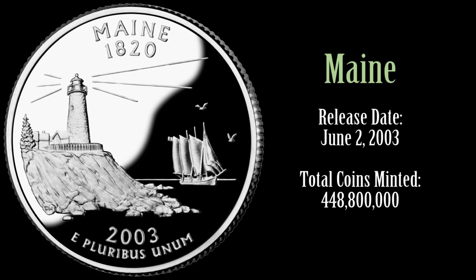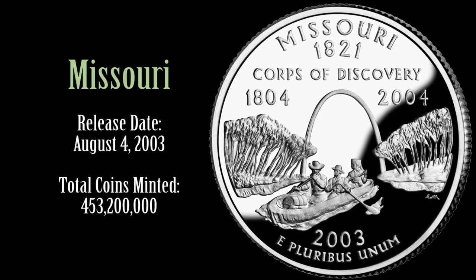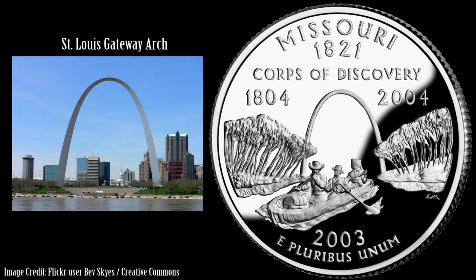Maine's Quarter features the early 19th century Pemaquid Point Lighthouse and the schooner Victoria Chimes, built in the year 1900. Missouri's Quarter features the Gateway Arch of St. Louis, which was built in 1935. The arch is the world's tallest at 630 feet and a monument to westward expansion. The return of Lewis and Clark in a canoe being rowed by a slave named York is shown as they come down the Missouri River. The Lewis and Clark expedition is also recalled in the caption Corps of Discovery and the dates of 1804 and 2004, representing the 200th anniversary of the expedition.